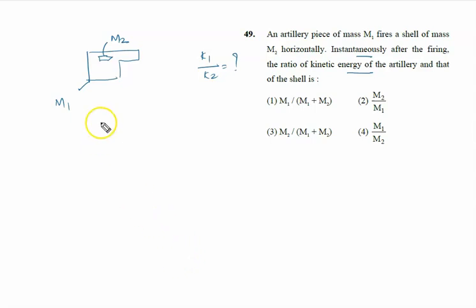The first thing to know is that the bullet will go forward and the gun will go back, and the momentum change is the same. We all know very well that K equals p squared by 2m.